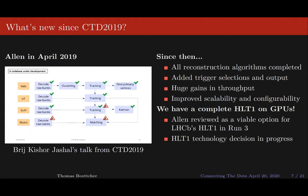It's interesting to see the progress we've made since Allen was presented at the last Connecting the Dots in 2019. At that time, big parts of the reconstruction sequence weren't finished. Since then, all reconstruction algorithms have been completed, we've added trigger selections and output, and many algorithms have been completely rewritten, giving us huge gains in throughput. A lot of work has also gone into improving the scalability and configurability of Allen — work vital to take Allen from a prototype to an actual trigger running during online data taking. In summary, we have a complete HLT1 on GPUs, Allen was reviewed as a viable option for LHCB's HLT1 in run three, and the final technology decision is currently in progress.